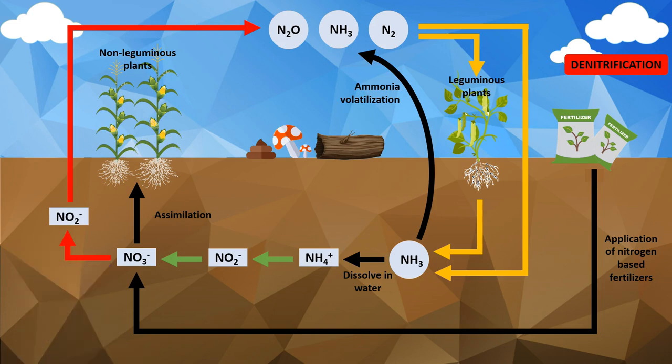When an organism dies, the process of microbial decomposition results in the hydrolytic breakdown of proteins into amino acids. In a process called deamination, the amino groups of amino acids are removed and converted into ammonia. This release of ammonia is called ammonification.